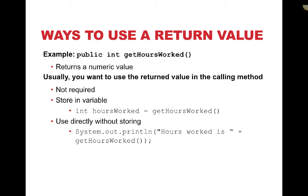Here are examples of ways we can return a value to the place where a method was called. If I have a method called getHoursWorked that is public and returns an int, normally you call this method so that you can use it again. You can store that result in an integer variable of the same type. Since getHoursWorked returns an int, the variable storing the result will be an int. We can also use the results from a method without storing it directly — for example, you can print out 'hours worked' with a plus sign and just call the method, and whatever value comes back from getHoursWorked will be printed inside that print line statement.